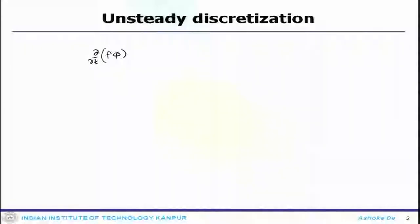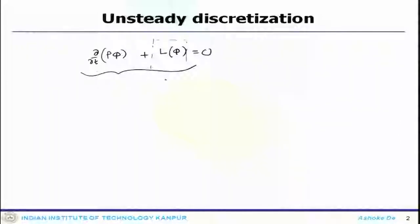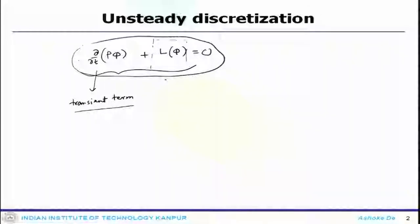That will actually make the platform ready for the fluid flow problem. In unsteady discretization, your governing equations for any scalar variable have the rest of the terms written in one operator. This is how the unsteady equation looks: your convection flux, diffusion flux, and source term are all included in this operator. Unsteady discretization includes discretization both in time and space.